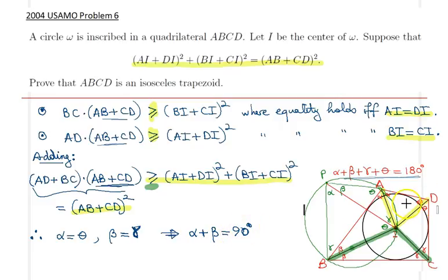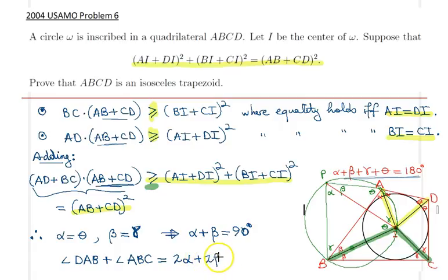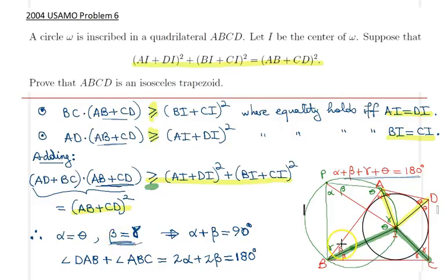Since alpha + beta + gamma + theta = 180 degrees, and alpha = theta, beta = gamma, it immediately follows that alpha + beta = 90 degrees. The sum of angles DAB and ABC is 2alpha + 2beta = 180 degrees, which shows BC is parallel to AD. Furthermore, since beta = gamma and alpha = theta with sides equal, we have an isosceles trapezoid. That solves the problem.